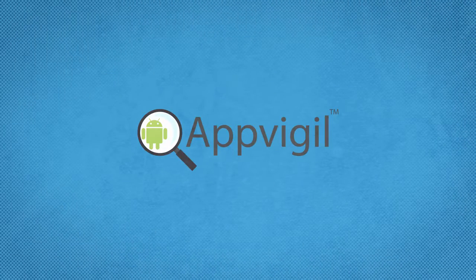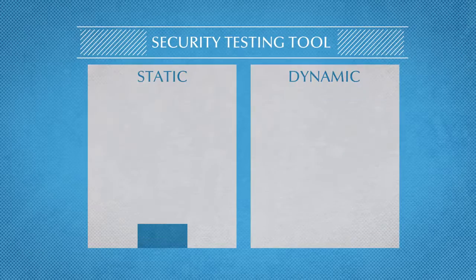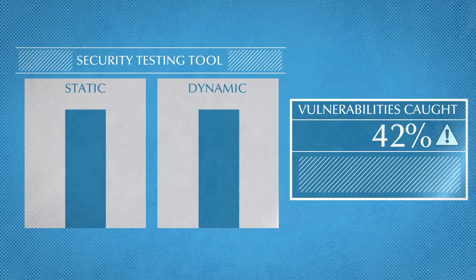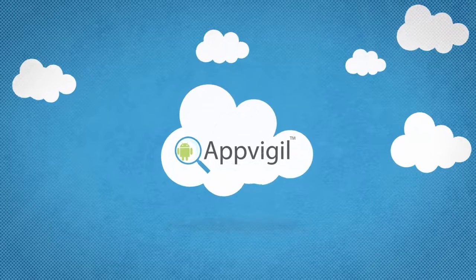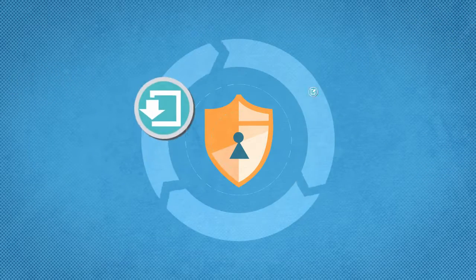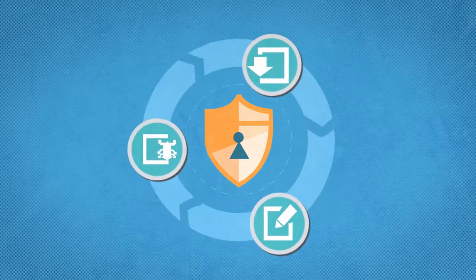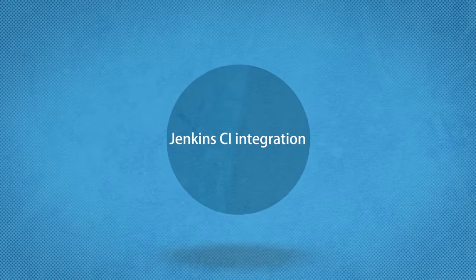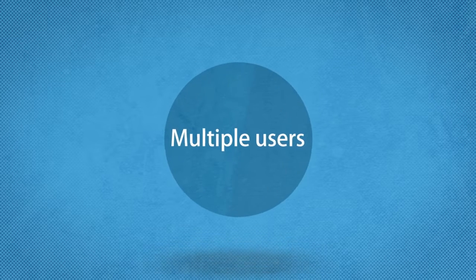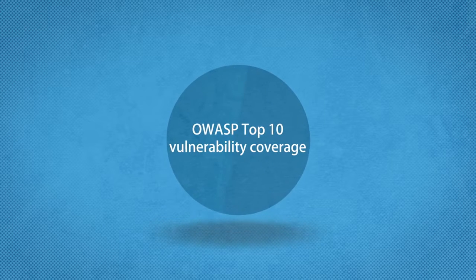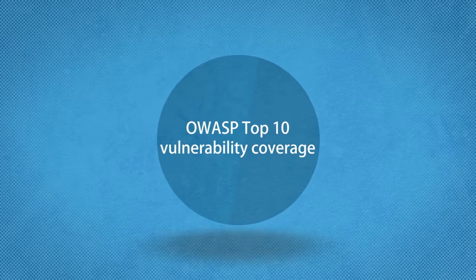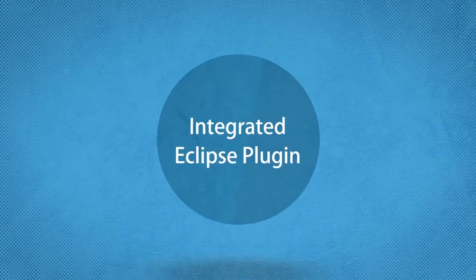AppVigil provides exact location of loopholes with patch recommendations, and in turn serves your developers with more time to create awesome features for your Android apps. AppVigil performs static along with dynamic analysis to provide accurate results. Since it's based on our private cloud, it's very affordable and fast, with lots of super cool features like Jenkins CI integration, no source code sharing, multiple users, OWASP top 10 vulnerability coverage, and integrated Eclipse plug-in.